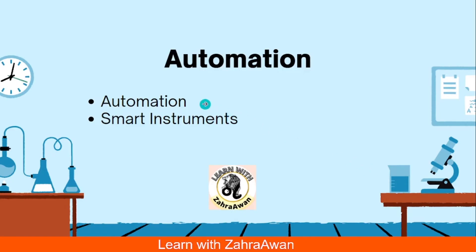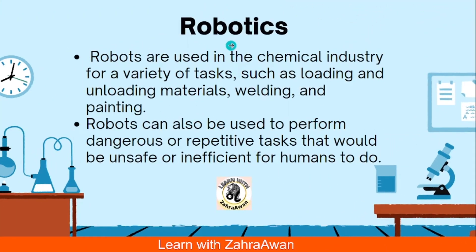Automation types include automated instruments, manual instruments, and many other things covered in the first video. Now regarding automation applications: the first type is robotics. Robotics are used in the chemical industry for a variety of tasks — loading, unloading, welding, and painting. These are used in chemical industries for welding and loading tasks.